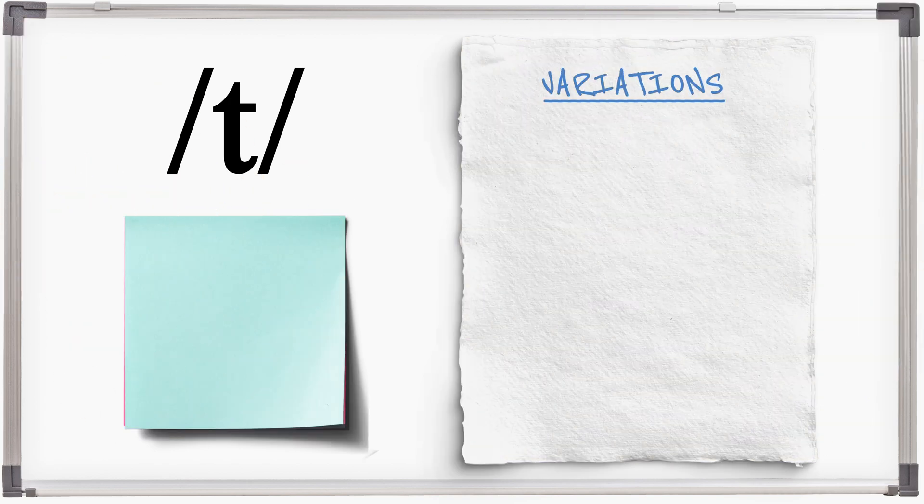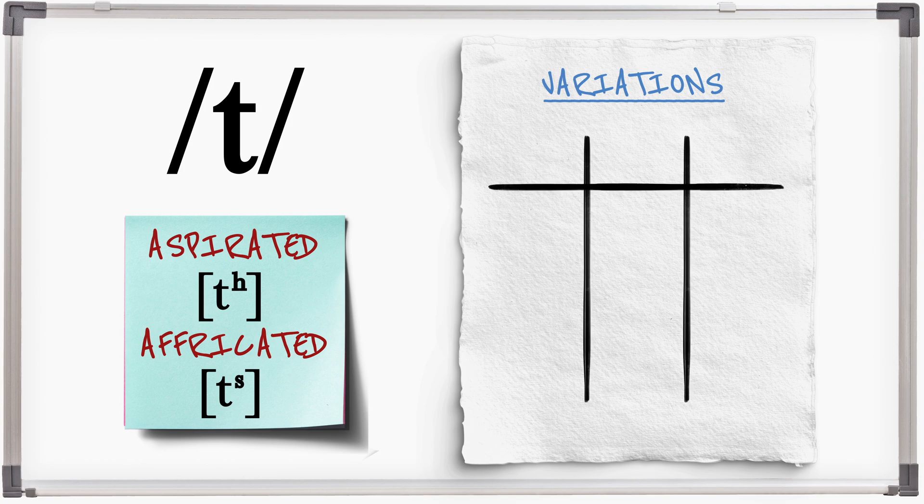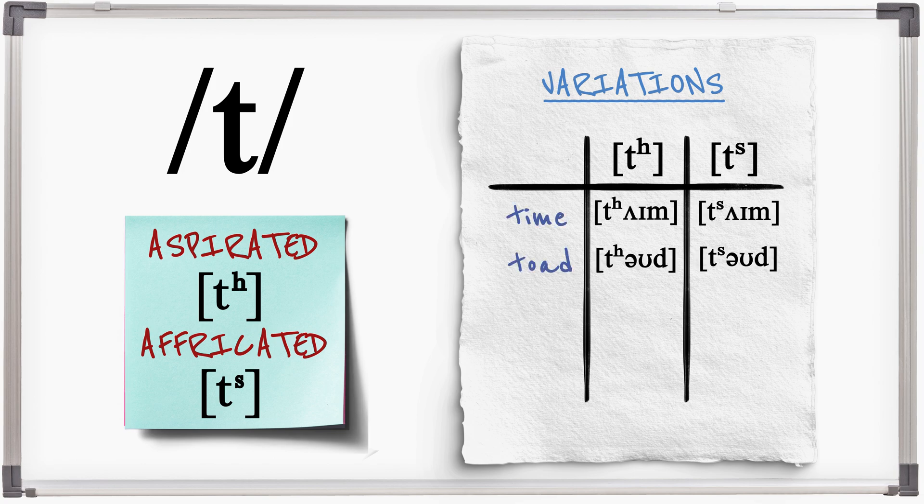The pronunciation of T varies considerably depending on its surrounding sounds. In GB English, T followed by a vowel is normally aspirated with a puff of air or affricated with a fricative release. Compare: time, time, time. Toad, toad, toad. Attack, attack. Waiter, waiter.